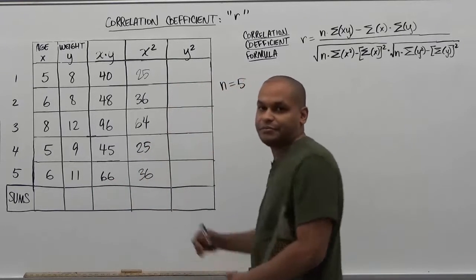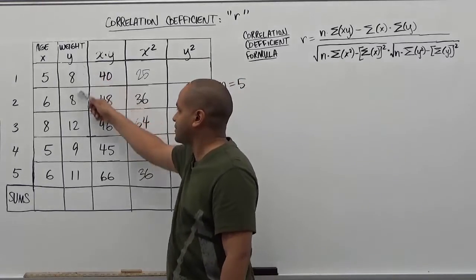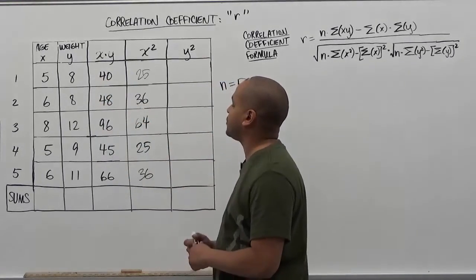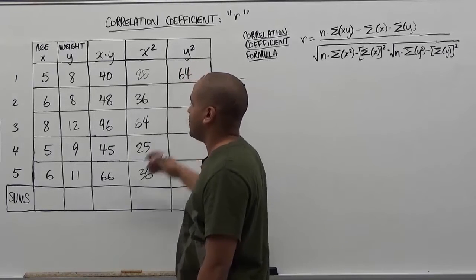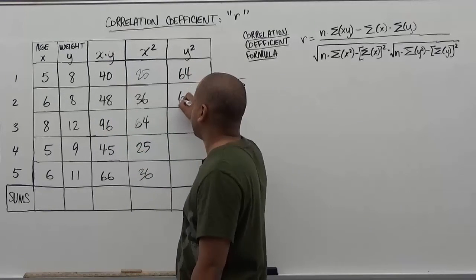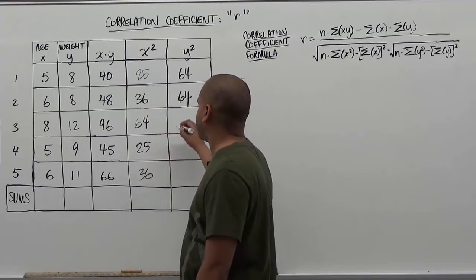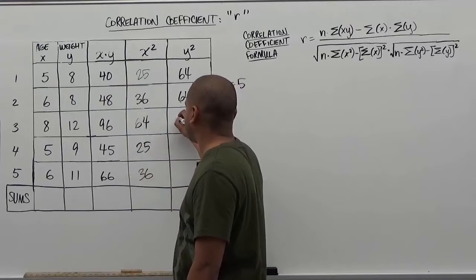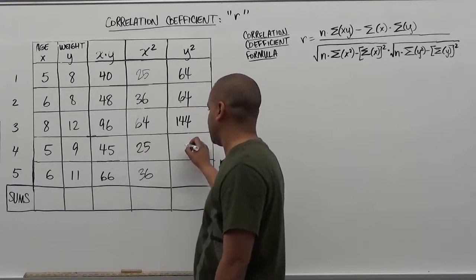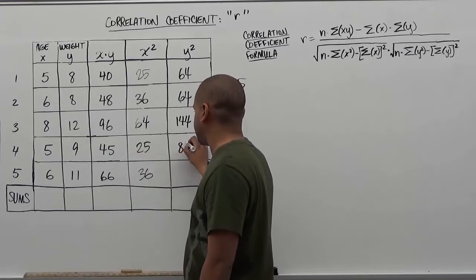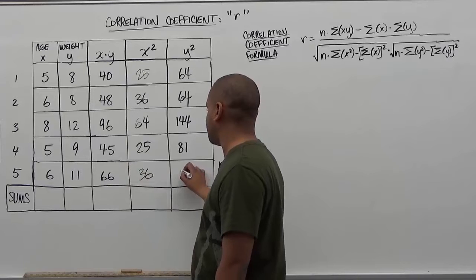Our final column is the y squared value. We're going to take the values of weights and square them. Our first weight is eight squared, which is 64. Our second weight is eight again, which is again 64. Our third weight is 12 kilograms, which becomes 144 when we square. Our fourth is nine — nine squared gives us 81. And our final one is 11 squared, which is 121.